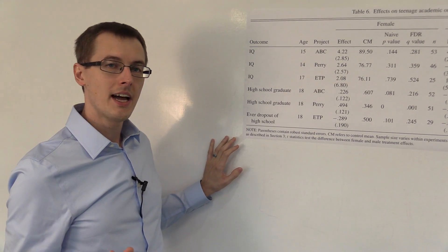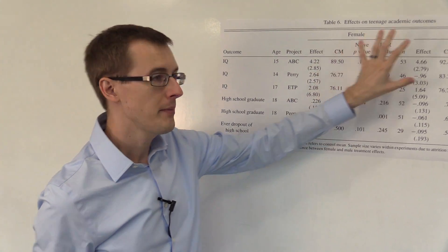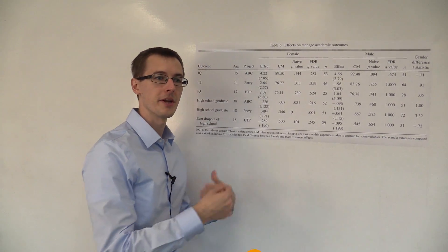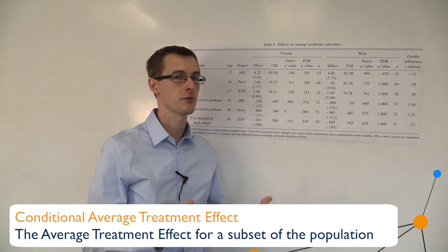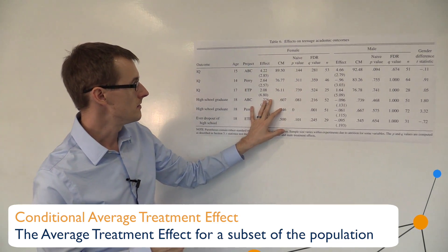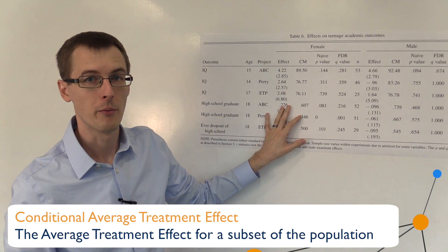Just like in the previous analysis, we're going to split it between female and male. We're going to look at conditional average treatment effects for being female and for being male. There's a bunch of columns here, so let's go through them one by one.